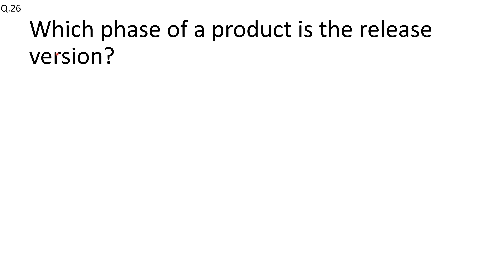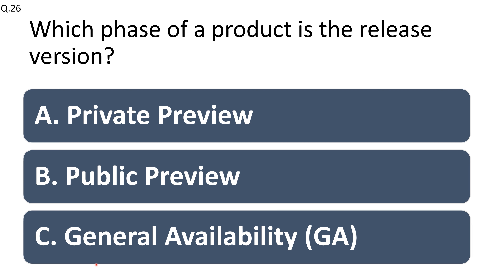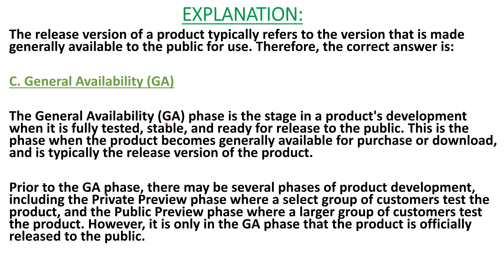Question number twenty-six: which phase of a product is the release version — private preview, public preview, or general availability? The right answer is general availability. This is the stage when the product is fully tested, stable, and ready for public release — the version made generally available for purchase or download.